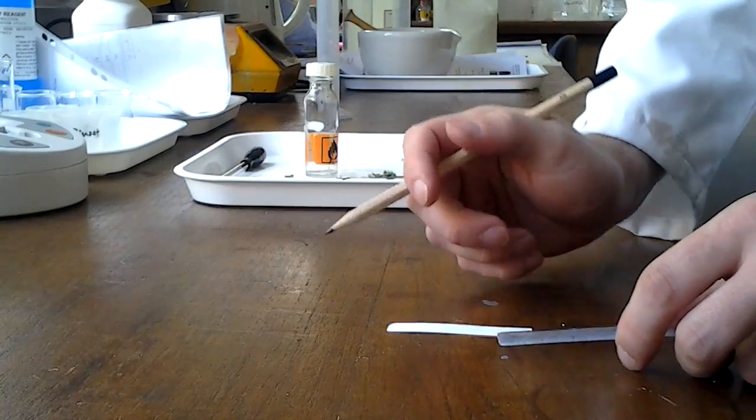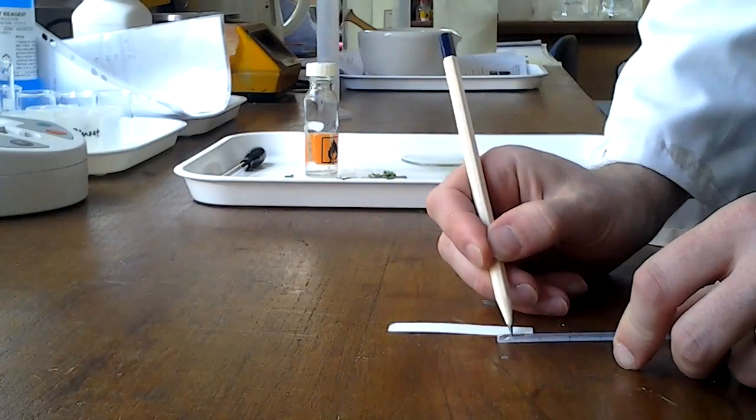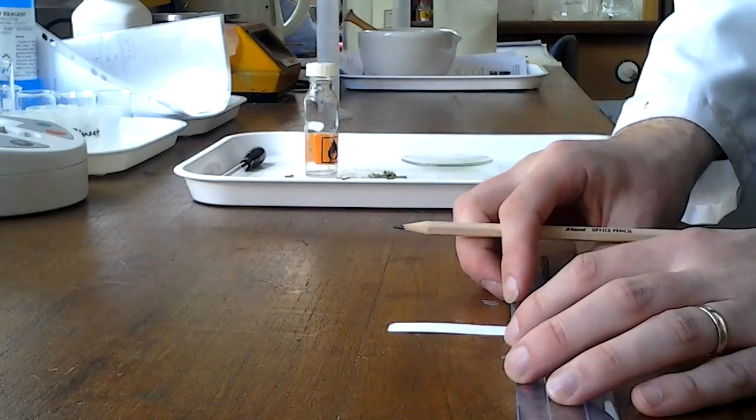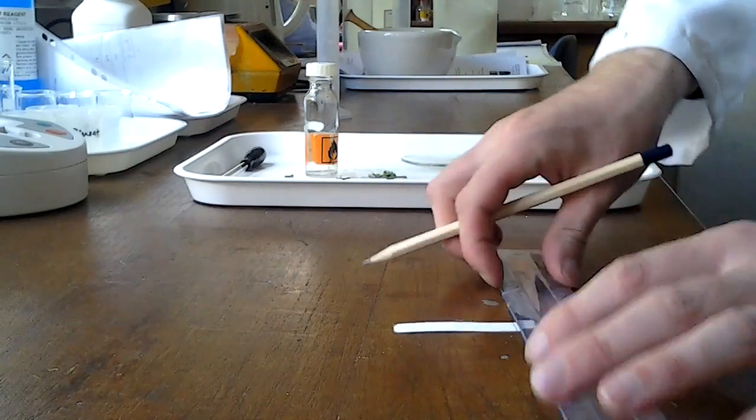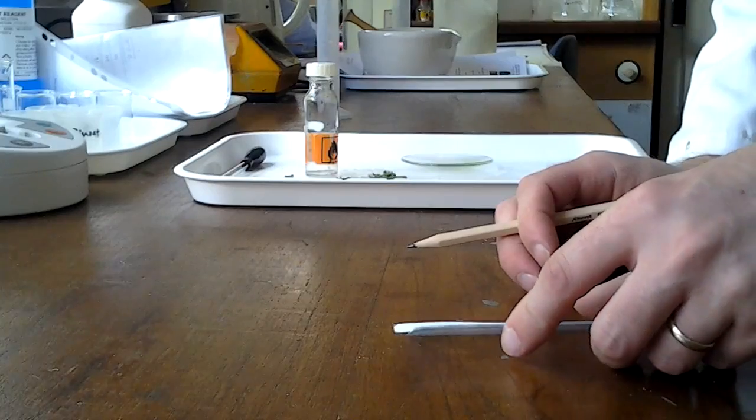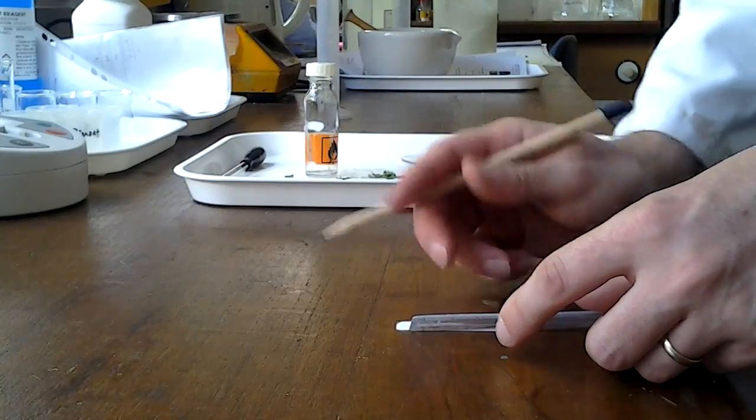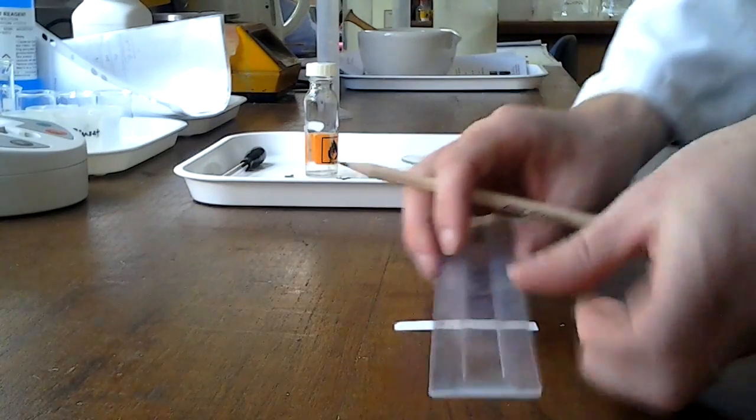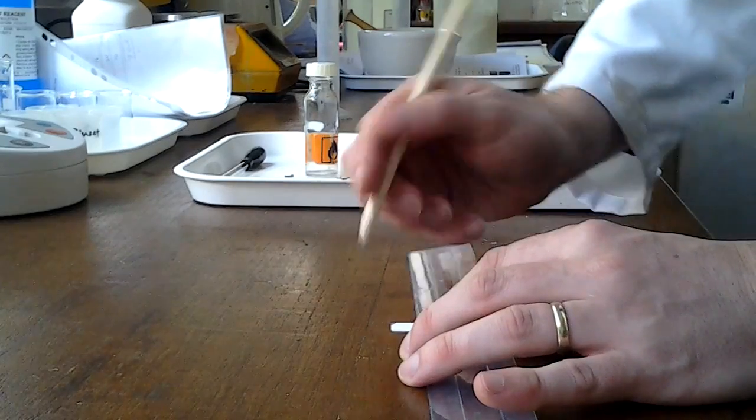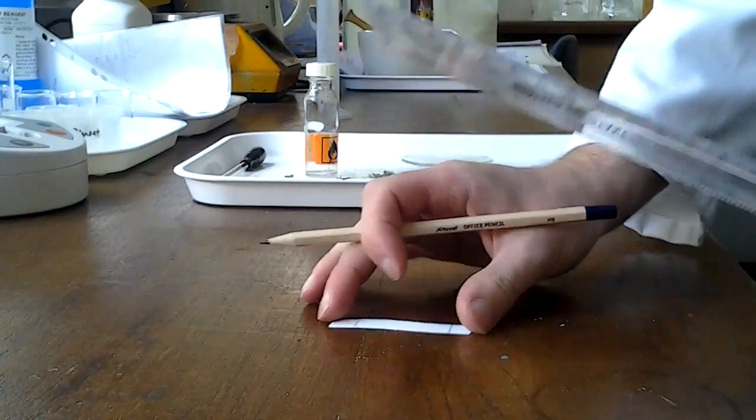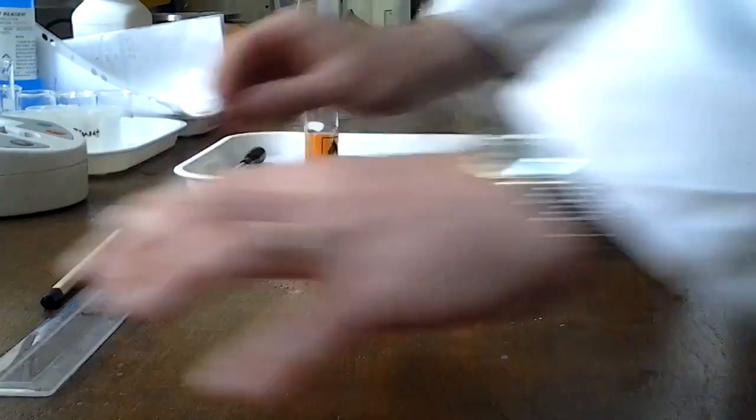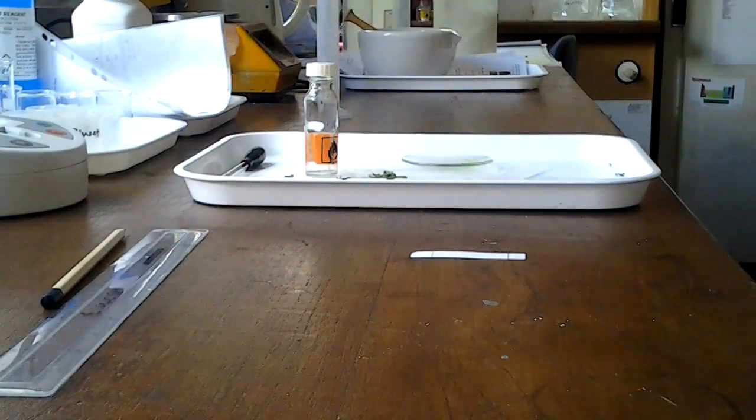So we need to set it up with a start and finish line. I'm going to just draw a line across the bottom in pencil, one centimetre from the bottom, and then four and a half centimetres, or 45 millimetres if you prefer, from that, we're going to have our finish line. That's now all set up to run our pigments on.